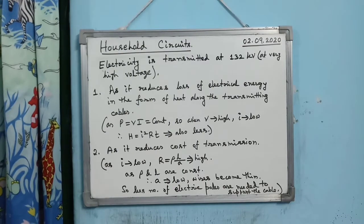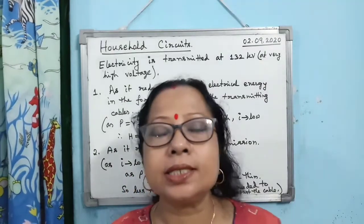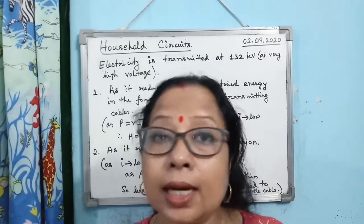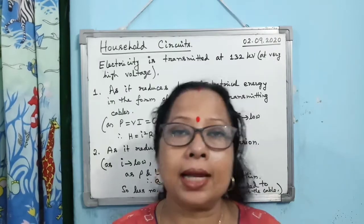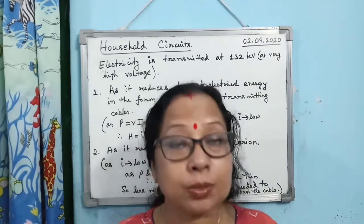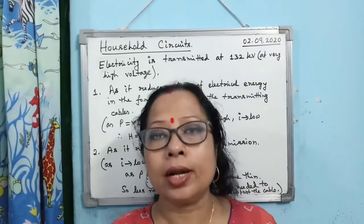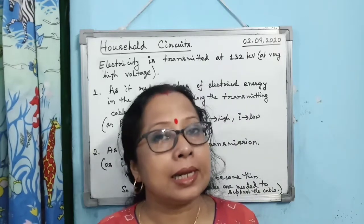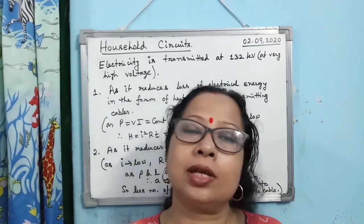Electric power is generated at 11 kilovolt, but power generating stations are never situated near the consumers — they are generally far away from the locality. So after generating electric power, it must be transmitted through a long distance to reach consumers. Although generated at 11 kilovolt, it is never transmitted at that low voltage.